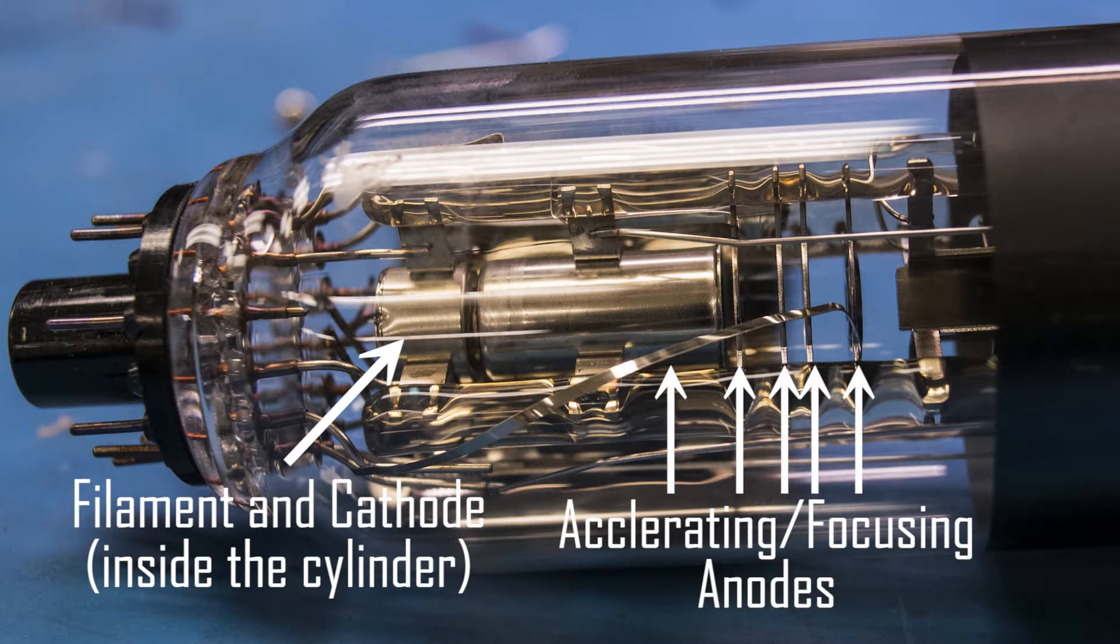The first component of the electron gun is the filament. The filament is a thin piece of resistive wire that heats up and becomes incandescent when electrical current is passed through it. This hot filament allows electrons to be emitted more easily from it due to the process called thermionic emission.